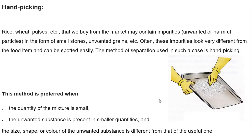First, handpicking. When we buy rice, wheat, pulses, etc. from the market, it contains some impurities like small stones or unwanted grains. We generally separate the unwanted things like small stones or unwanted grains with the help of our hands. This method is known as handpicking, as we use our hands to separate the impurities or unwanted particles.